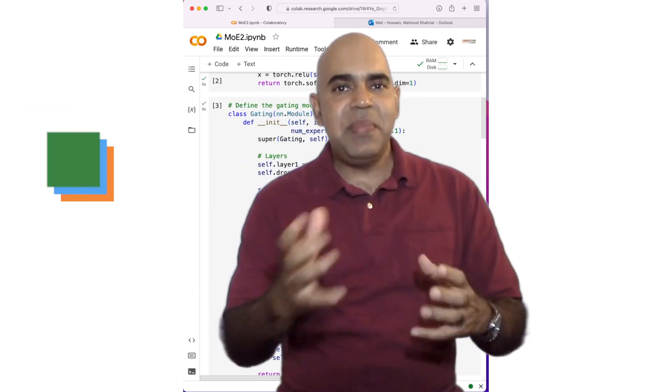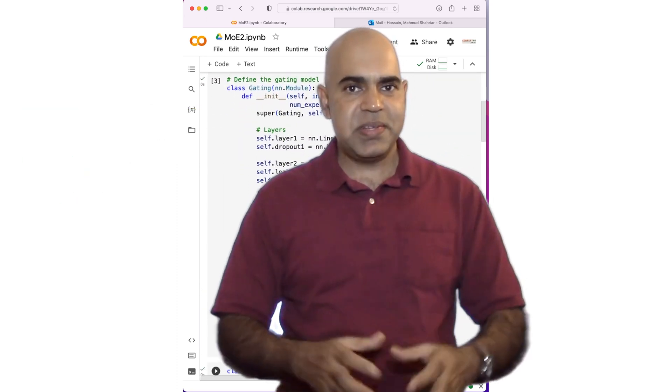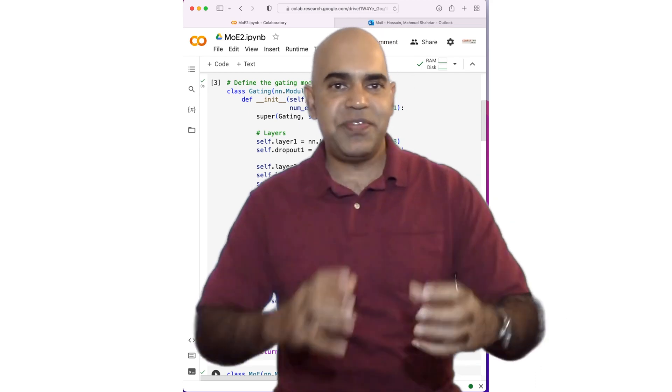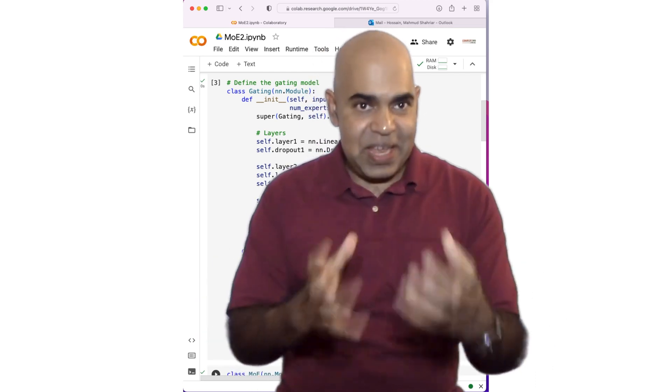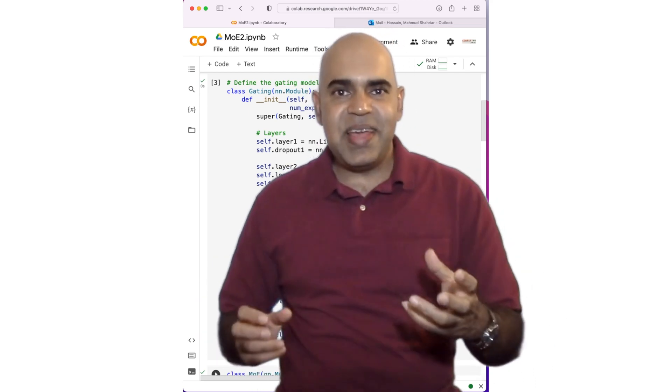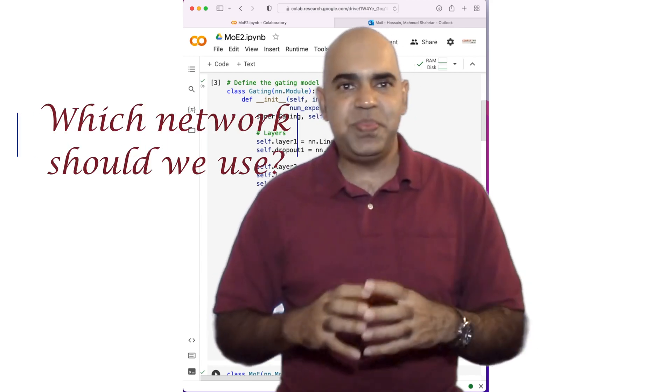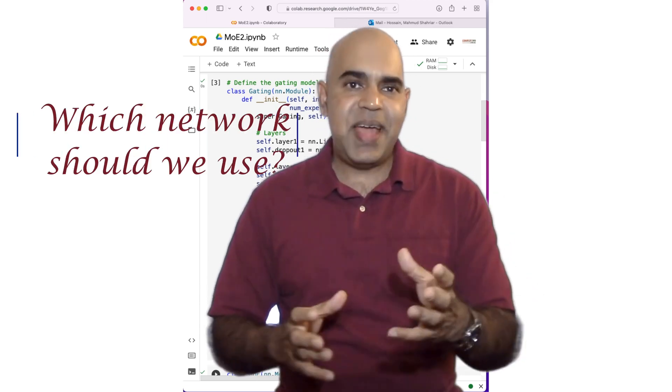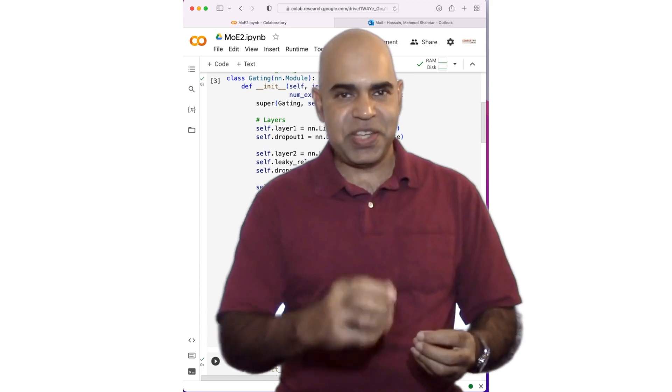Imagine having multiple specialized neural networks, each good at a specific task. Now, based on the input data, could we decide which network or expert we should use? That's precisely what a mixture of experts does.